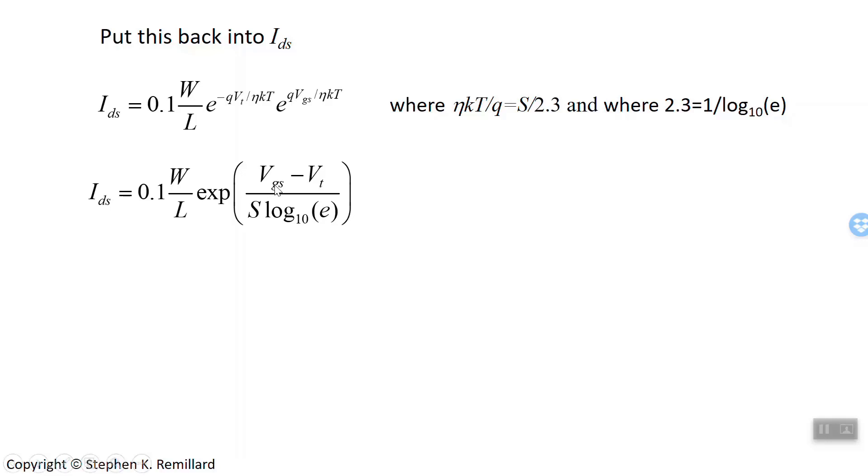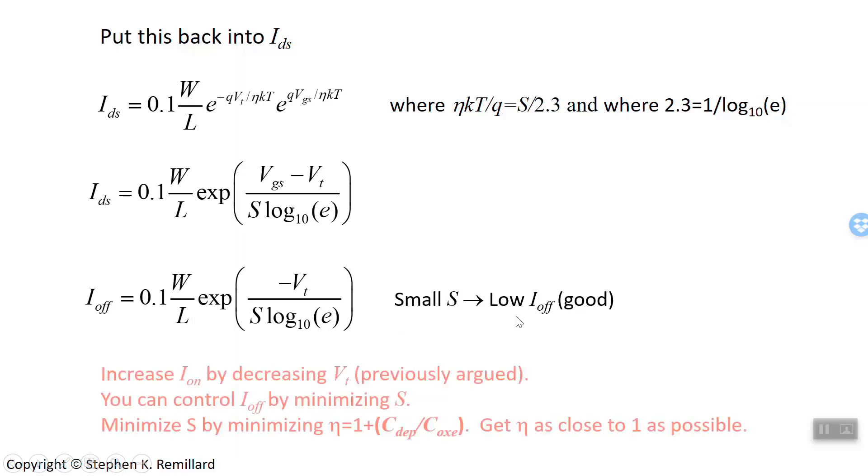Now if you set the gate voltage to 0, you have the off current. And so that's a useful expression there for off current in terms of subthreshold swing. And you can tell from the expression right away, in order to get I off really small, you need S to be really small because then it's e to a minus big number. And that's the goal. So small subthreshold swing is desirable. It gives us a nice low off current. So that's a separate thing you can optimize. Focus your threshold voltage on increasing the on current. And focus your subthreshold swing on minimizing the off current. And you're not trying to optimize both I on and I off with the threshold voltage in the middle. It takes away the competing interests.